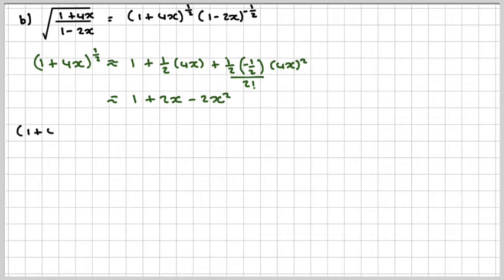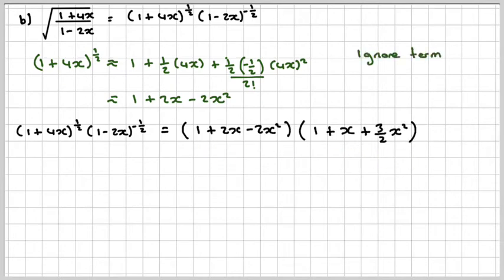Right, and now in order to find the expansion of this, we just need to multiply our two terms together. So this is what we just worked out. This was given in the question, and we ignore any term greater than x squared.